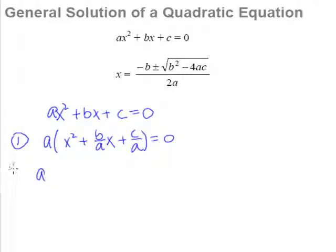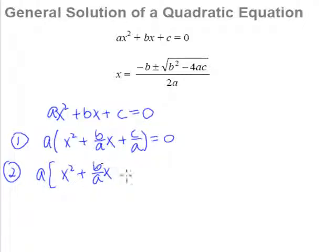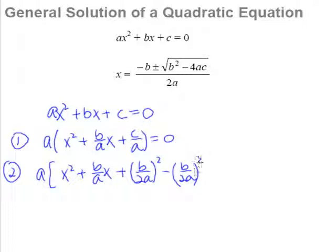The second step of completing the square will be to take the coefficient of x, which in this case is b over a, and divide it by 2. So b over a divided by 2 gives us b over 2a. Now we'll add this item in, square it, and minus away the same item, as per what we have learned earlier on, and we copy down the c over a, equal to zero.